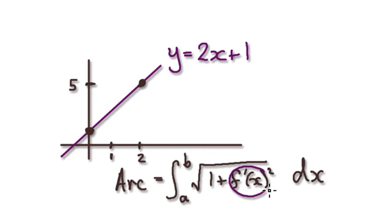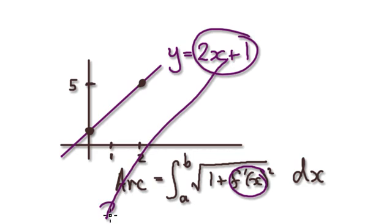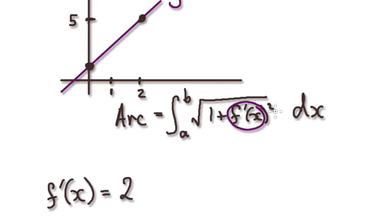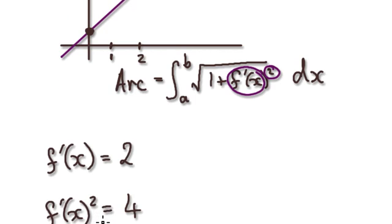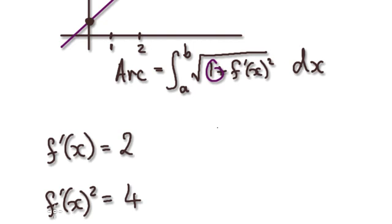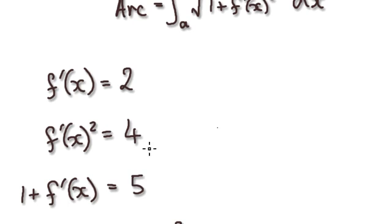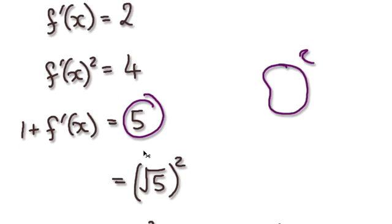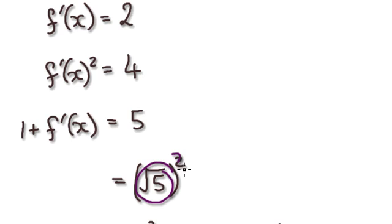Looking at this, we need to find the derivative. The derivative of this is 2. Once we've got the derivative, we need to square it — squaring it gives us 4. Then we need to add 1, so that gives us 5. Our normal routine is to rewrite this in the form of something squared, so we can write it as (√5)².